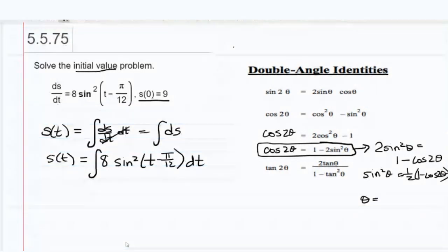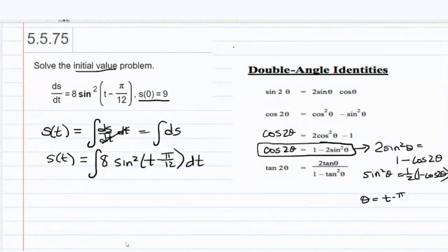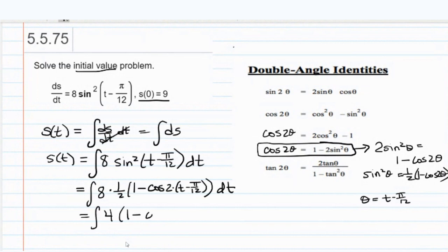In this case, theta is actually t minus pi over 12. So we're going to replace sine squared t minus pi over 12 with 1 half times 1 minus the cosine of 2 times t minus pi over 12. So that's going to be the integral of 4 times 1 minus cosine of, and we're going to have 2t minus pi over 6 dt.